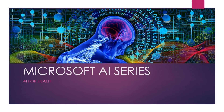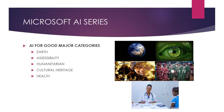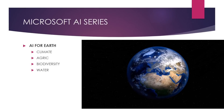Let's take a brief look at the slides expounding on the Microsoft AI for Good series, focusing on AI for Health. The major categories listed are Earth, Accessibility, Humanitarian, Cultural Heritage, and of course Health. Under AI for Earth, you have climate, agricultural processes and activities, biodiversity, and water.